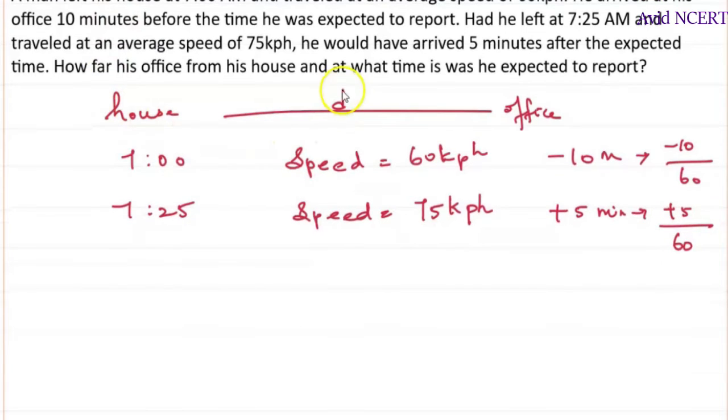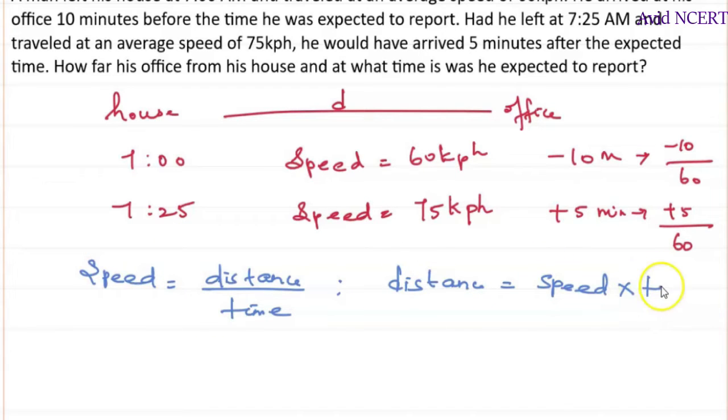So in both cases, distance is same and they are asking for the distance. The formula we know here is speed equals distance by time. Since they are asking for distance, which is distance equals speed times time. And in both cases, distance is same, so we are going to equate the distance here.